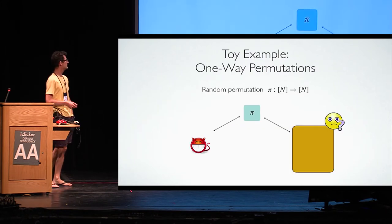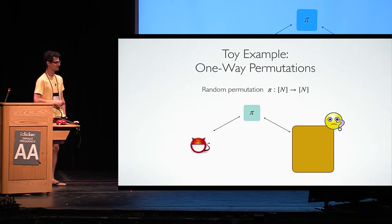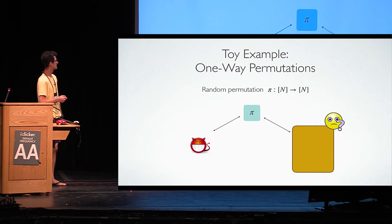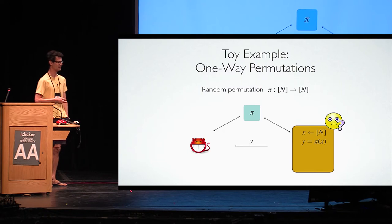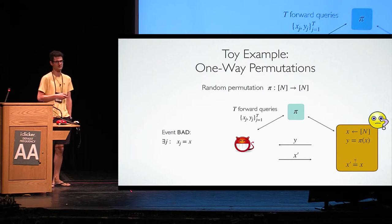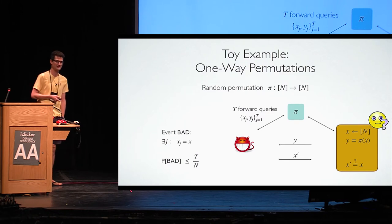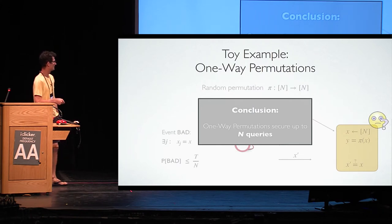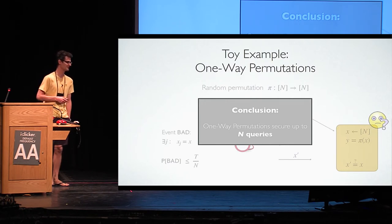You don't always like everything you see at a museum. Here is a toy example. Suppose you can only make forward queries to your random permutation—this is like the security of one-way permutations in the random permutation model. The challenger chooses a random x, computes π(x), and sends that y to the attacker; the attacker's job is to find x. This is easy to analyze: the bad thing that can happen is if the attacker queries the actual x, and by a simple union bound the probability of this is t/n. Conclusion: inverting a permutation is secure up to n queries to the permutation.